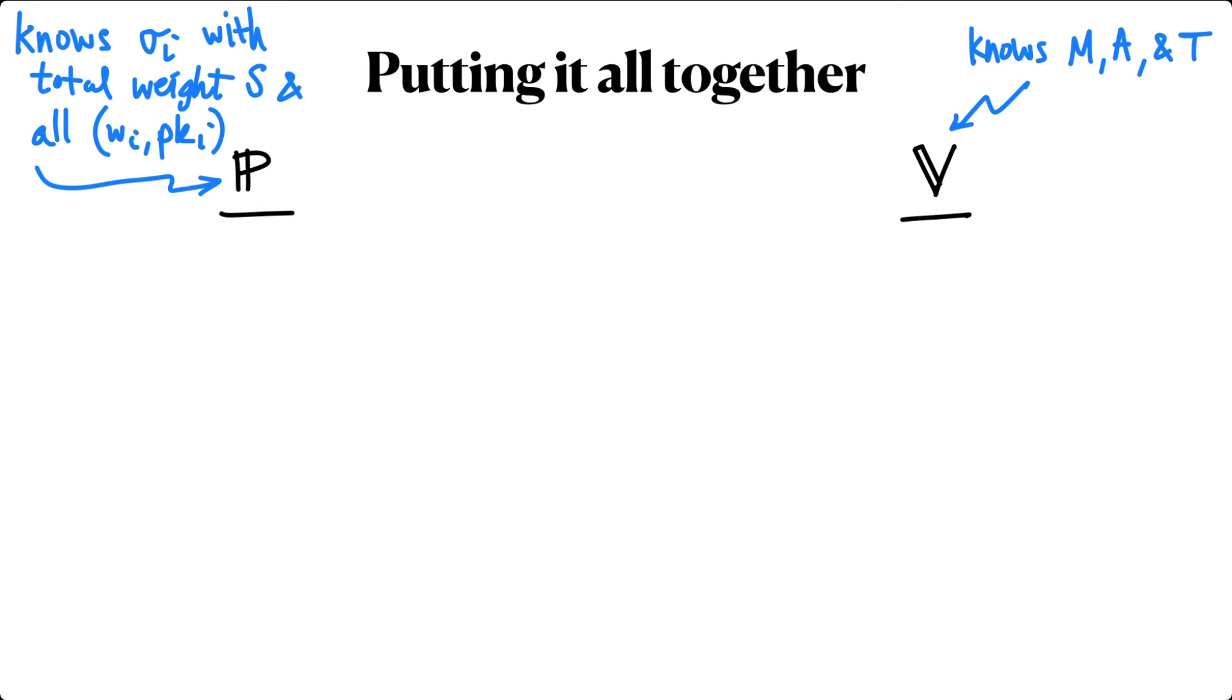The prover builds a Merkle tree of attester's signatures and sub-range lower bounds. Then the prover sends the root of the signature tree and the claimed total weight S to the verifier.